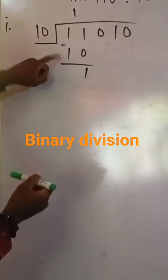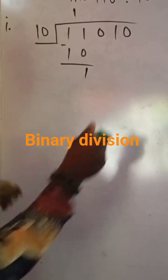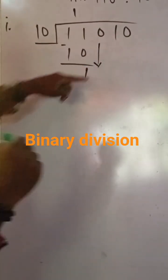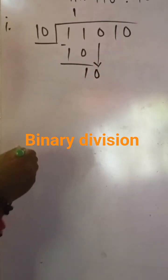The next step is to use an arrow to bring down the next value. The next value here is 0, making this value to be 10.